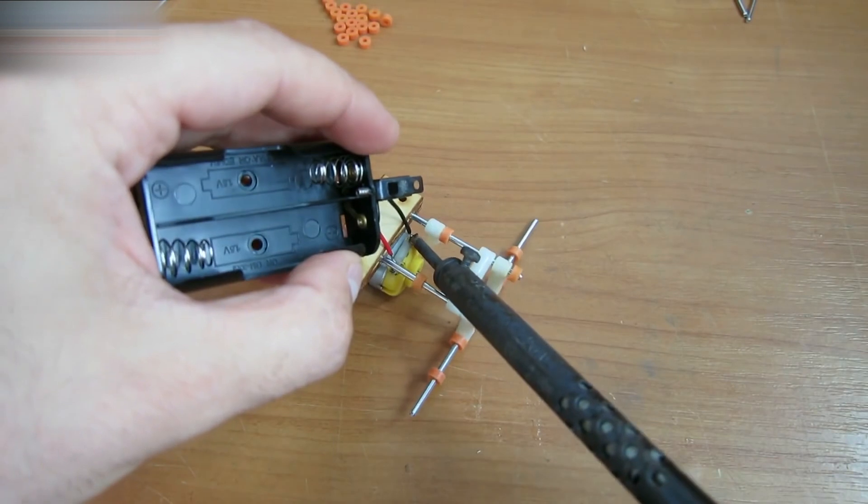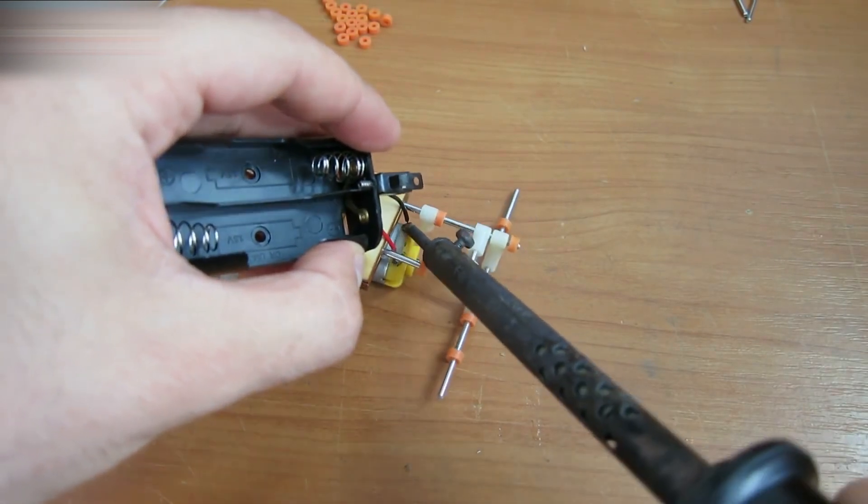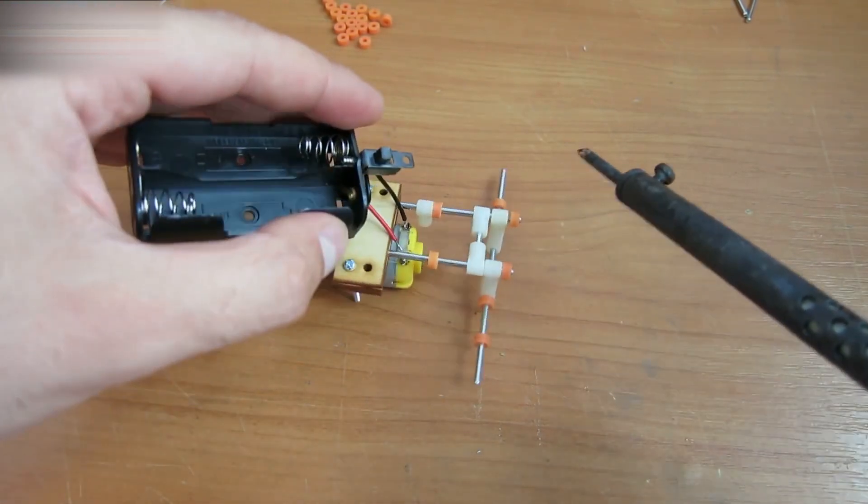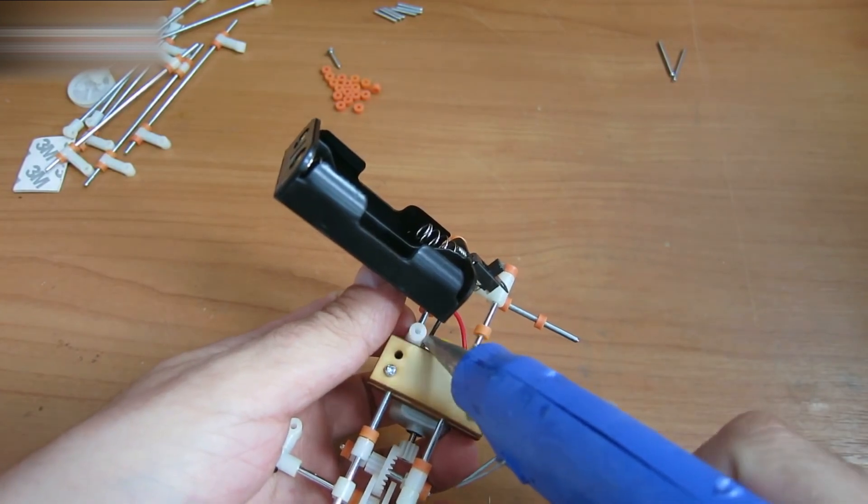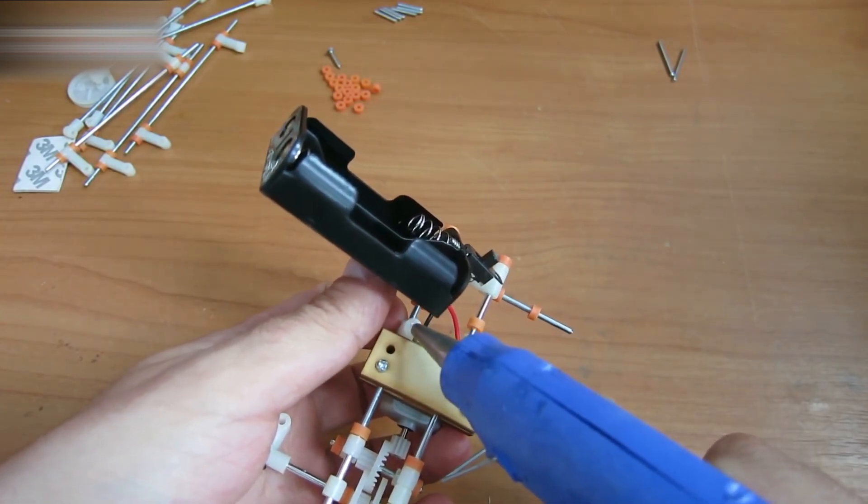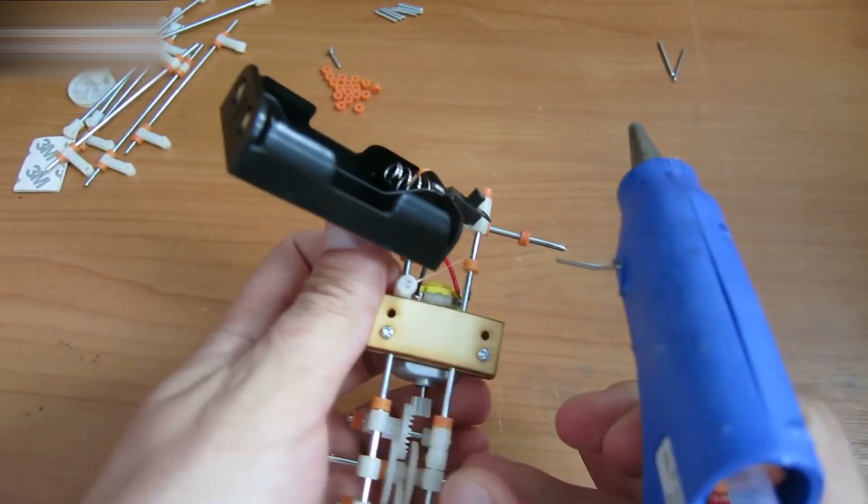Solder the battery case to the motor. Attach the battery case to these white parts with hot glue.